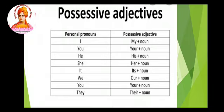Next, we are going to see possessive adjectives. As I told you, the possessive adjective will always come before the noun. So I have tabulated it here: my + noun, your + noun, his + noun, her + noun, its + noun, our + noun, your + noun, their + noun. The noun can be a name of a person or a thing, whatever it is.